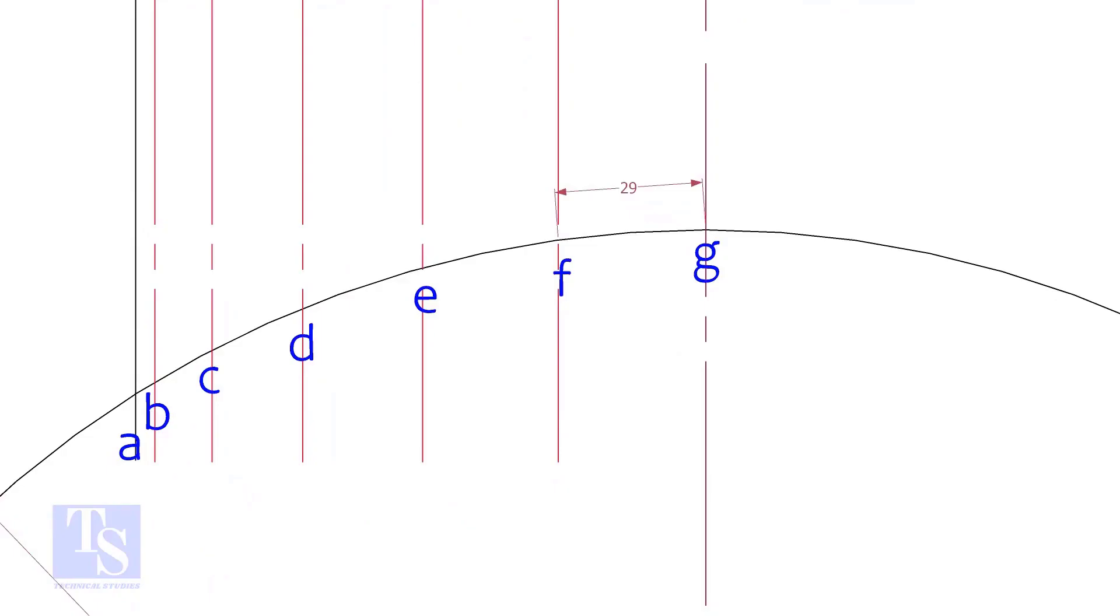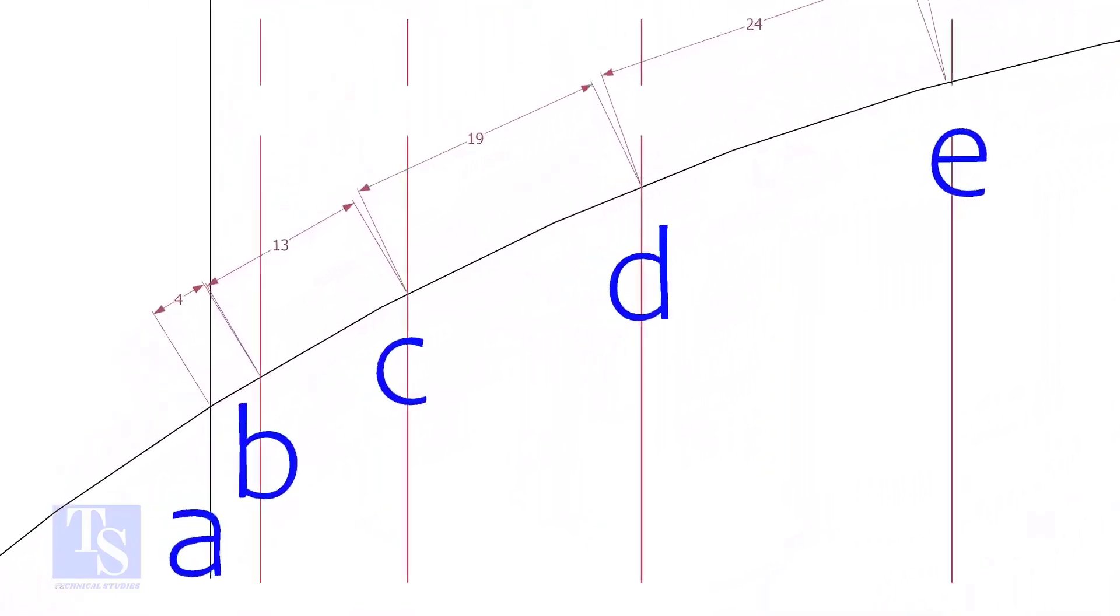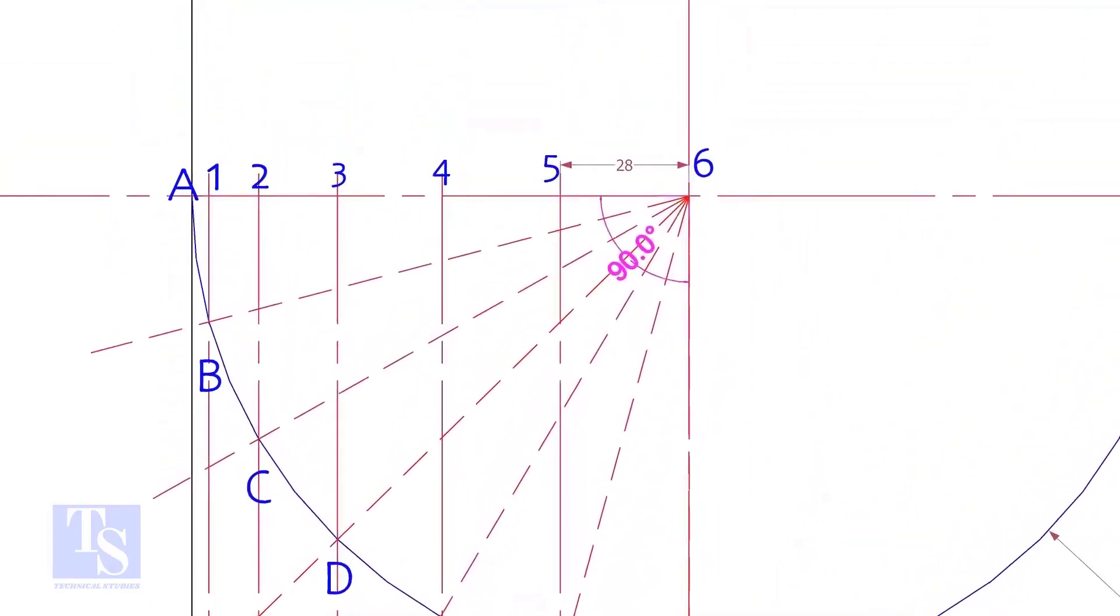Measure and note down the arc lengths GF, FE, etc. Don't measure the chord length. Hope you all know the difference between the arc length and the chord length. Go to the top and measure and note down these measurements.